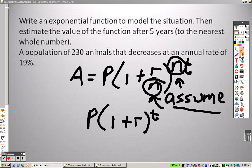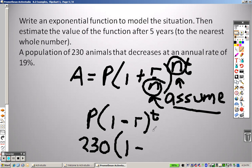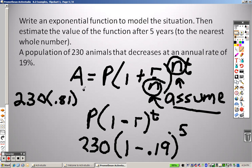So instead of addition there, we are actually going to do subtraction because we are depreciating. So it's actually a subtraction sign that goes in there. So it starts with 230 animals, and it decreases an annual rate of 19%. So I write that as 0.19, and I want to know it after five years. So really what we're looking at is 230 times 0.81 to the fifth power.